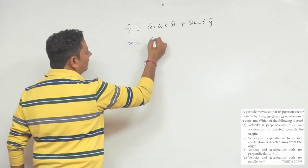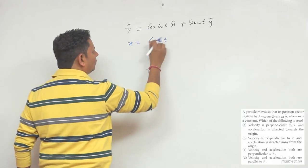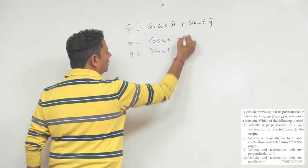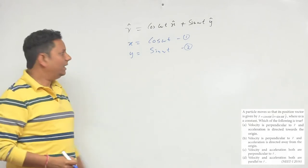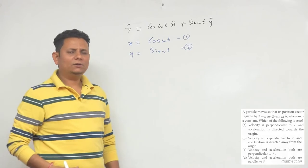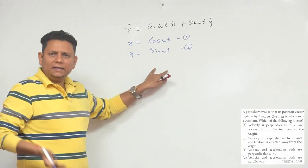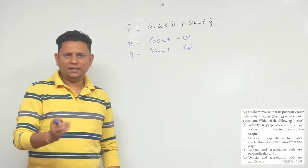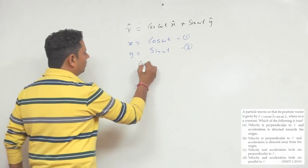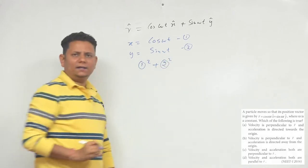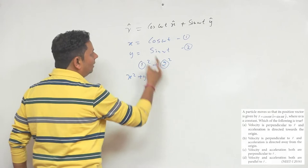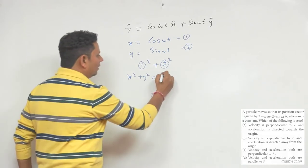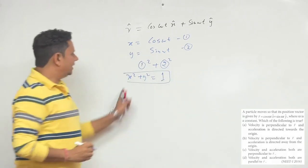From the position vector, we set x = cos(ωt) and y = sin(ωt). Then cos²(ωt) + sin²(ωt) = 1, which gives us x² + y² = 1.